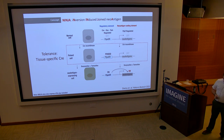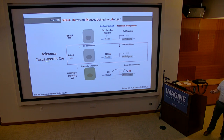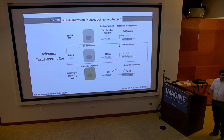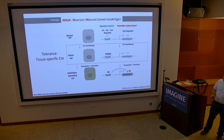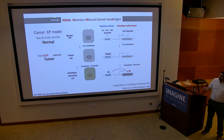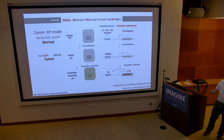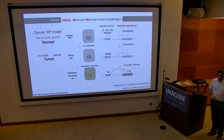We studied this in two contexts. We've used NINJA to make peripheral tolerance models by crossing to mice with tissue-specific Cres, turning on antigen in any tissue to ask what happens to CD8 and CD4 T cells specific for those antigens. We also crossed this to the KRAS p53 model, where initiating tumors with Cre causes recombinations in KRAS and removes p53, and then at a later time doxycycline and tamoxifen turn on antigens just in those developing tumors — allowing us to study T cell responses against the developing tumor.